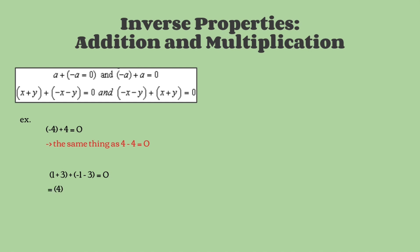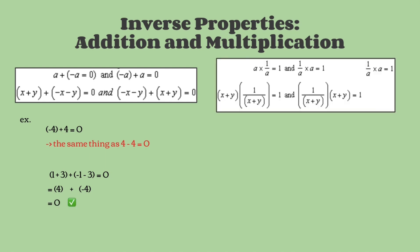So let's simplify this. 1 plus 3 is equal to 4. And we know that every time a negative number is subtracted by a positive number, it's equal to another negative number — so this is negative 4. So now we have negative 4 plus 4, which we know is equal to 0 from the previous example. So this checks out.